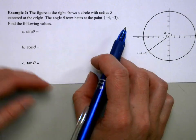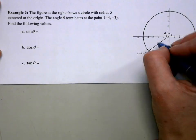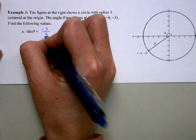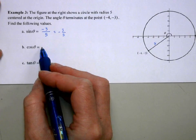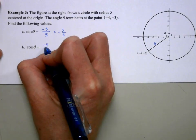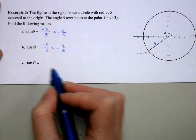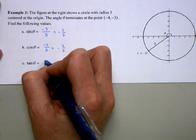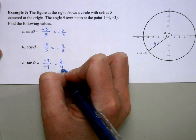Sine is the y value over our radius 5. So, the y is negative 3 over 5, or we could write this as negative 3 fifths. Cosine is our x value over that radius. Tangent is going to be the y value over the x value. So, that's going to be negative 3 over negative 4, or a positive 3 fourths.